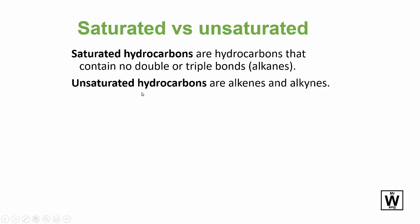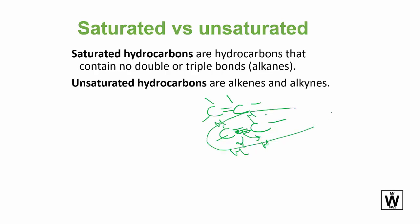Now that we've finished alkenes and alkynes, we can give them a label. They're called unsaturated because there is room to put more hydrogens onto these compounds — you can break these bonds up and create more. Alkanes are saturated, while alkenes and alkynes are unsaturated because you can still put more hydrogens in there.